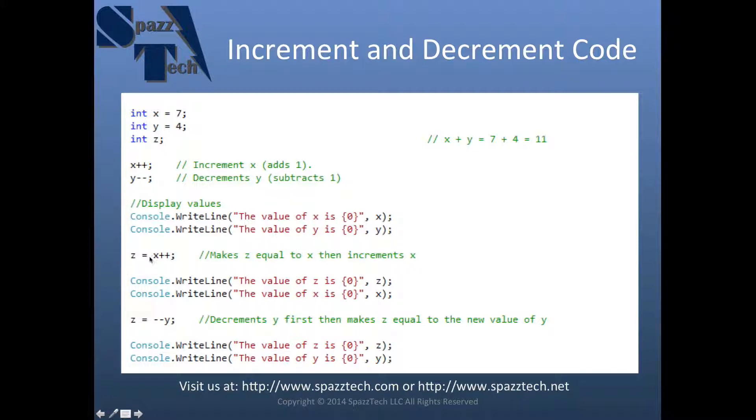Here, and this is where it makes a difference whether you're doing post or pre-increment. In this case here we have z equal to x++. So what this is going to do is take the current value of x, assign it to z, and then increment x. So it makes z equal to x and then increments x.